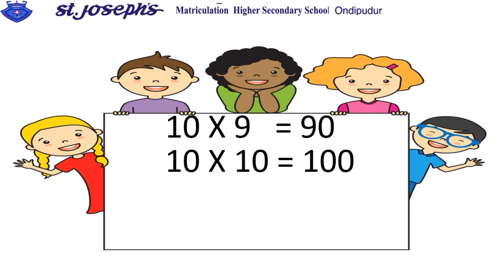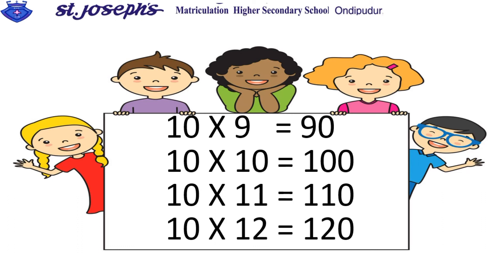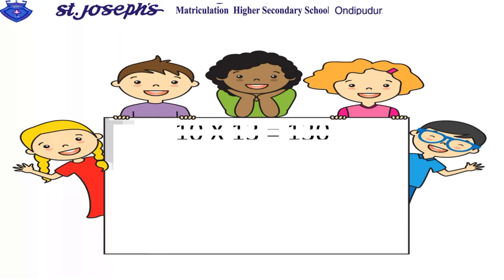Ten elevens are one hundred and ten. Ten twelves are one hundred and twenty. Ten thirteens are one hundred and thirty. Ten fourteens are one hundred and forty.